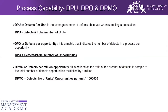Now we'll talk about process capability, covering DPU, DPO, and DPMO. DPU stands for defects per unit, DPO stands for defects per opportunity, and DPMO stands for defects per million opportunities. Defects per unit is the average number of defects observed when sampling a population. The formula for DPU is: defects divided by total number of units.